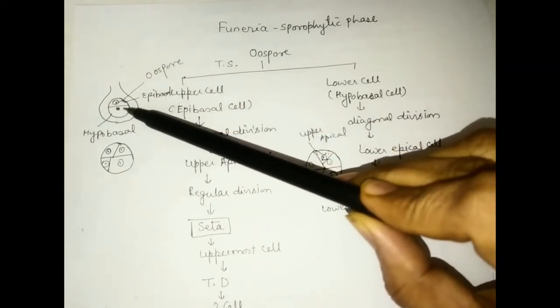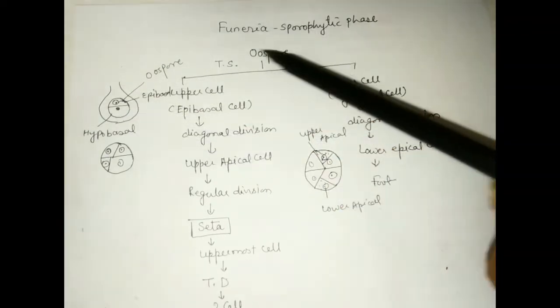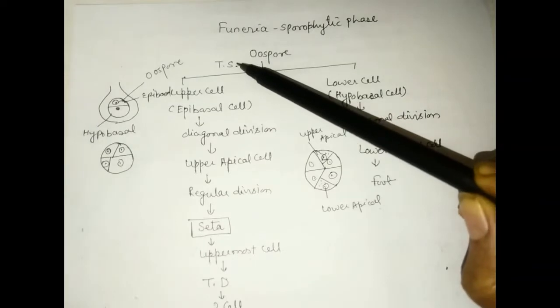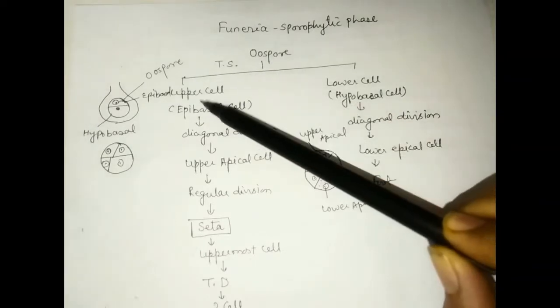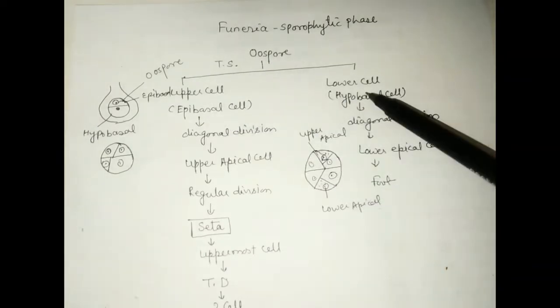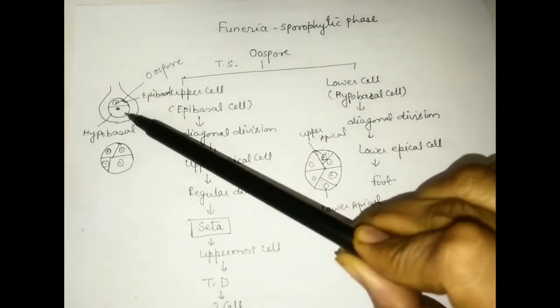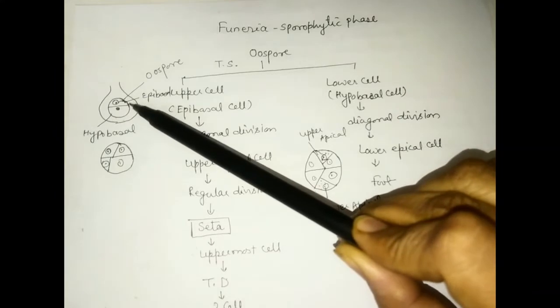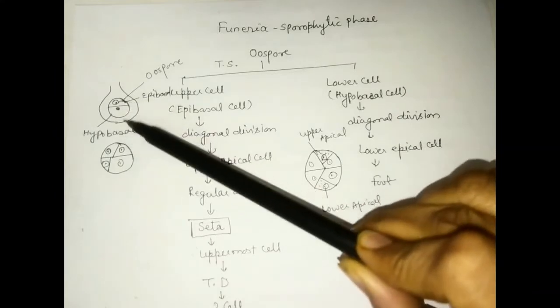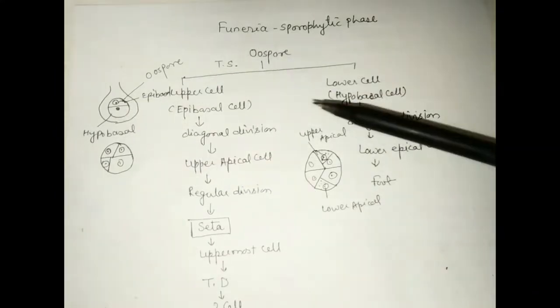The first division is a transverse division. In the transverse division, two cells are formed: an upper cell and a lower cell. These are called the epibasal cell and hypobasal cell.